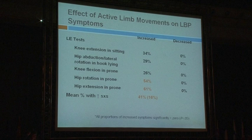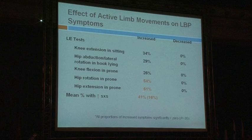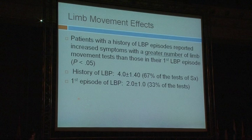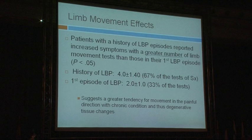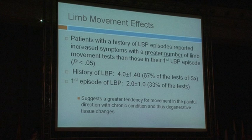In our examination, tests including knee extension in sitting, hip abduction with lateral rotation, knee flexion, hip rotation, and hip extension were evaluated. All of these increase symptoms. In 54% to 61% of patients, hip rotation and hip extension increased symptoms; none of these tests decreased symptoms. Those with chronic back pain had a positive test with 67% of tests, while those with only an acute or first episode had only 33% of tests induce back pain. This suggests a greater tendency for movement in the painful direction with a chronic condition, contributing to degenerative tissue changes.